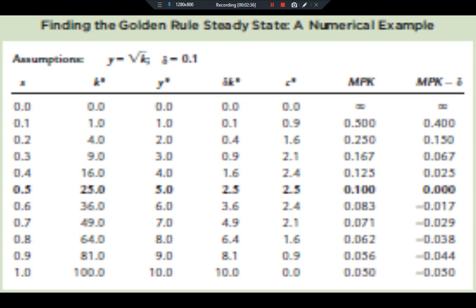We see that higher saving rate leads to higher output and higher depreciation. Steady state consumption is the difference between output and depreciation. First, consumption is rising with the rising level of saving rate, and consumption is at highest when saving rate is 0.5.